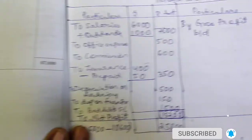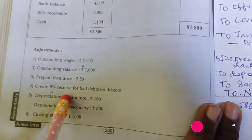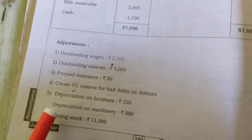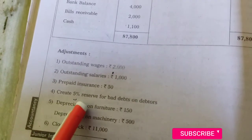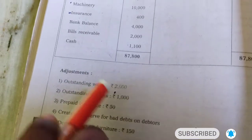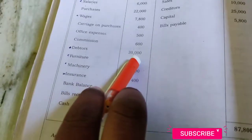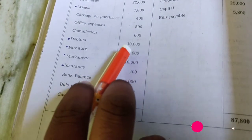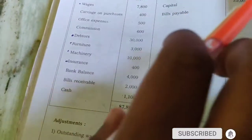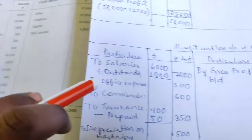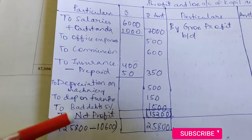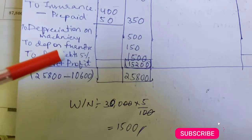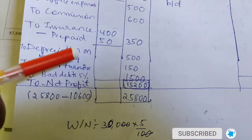Next, create 5% reserve for bad debts on debtors. This fourth adjustment is very important. Create 5% reserve for bad debts on debtors. Debtors amount is 30,000. We calculate 5% on debtors = 1,500, and this goes into the bad debts account.